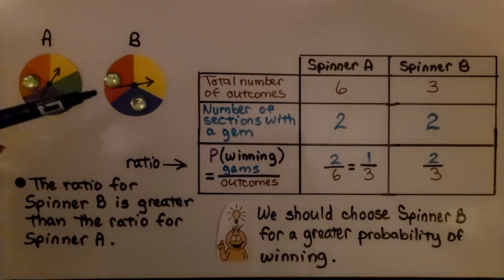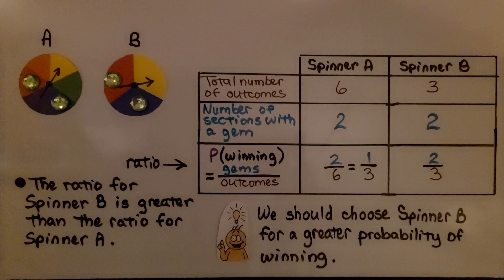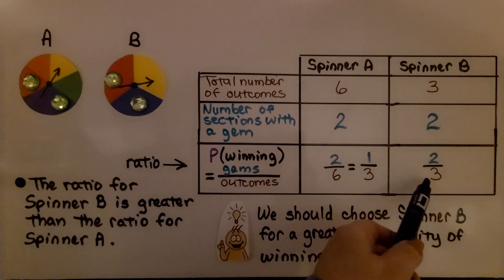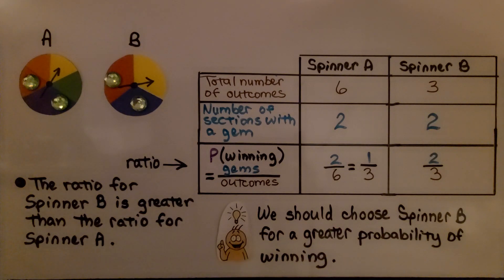The ratio for spinner B is greater than the ratio for spinner A. We should choose spinner B for a greater probability of winning. We've got a one-third chance of winning with spinner A, and a two-thirds chance of winning with spinner B.